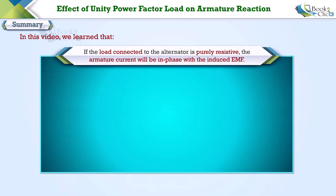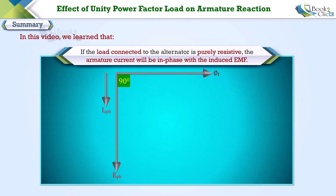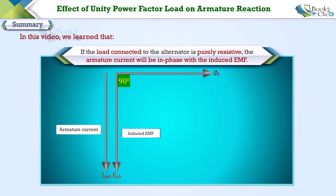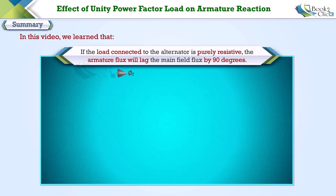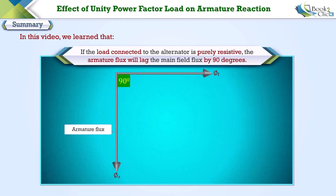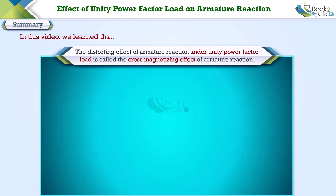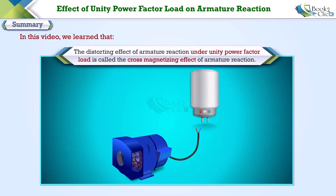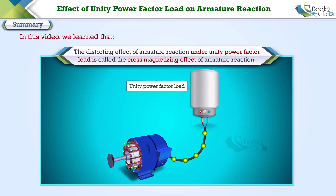If the load connected to the alternator is purely resistive, the armature current will be in phase with the induced EMF, and the armature flux will lag the main field flux by 90 degrees. The distorting effect of armature reaction under unity power factor load is called the cross-magnetizing effect of armature reaction.